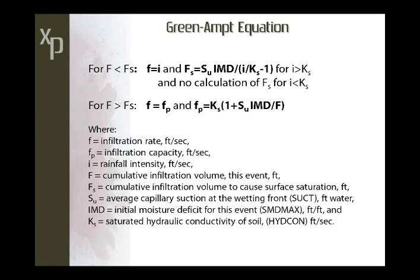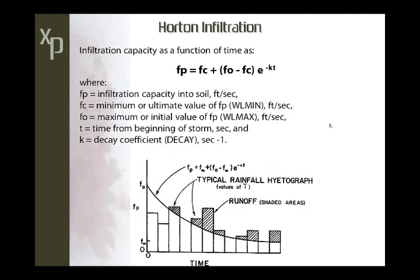The Green-Ampt equation has two sets of equations: before and after surface saturation, where FS is the cumulative infiltration required to cause surface saturation. Before saturation, the infiltration rate equals the rain rate. After saturation, cumulative infiltration is evaluated using physically descriptive soil parameters: the initial moisture deficit, saturated hydraulic conductivity, and average capillary suction. These are measurable parameters, making the method deterministic.